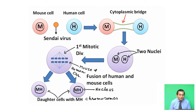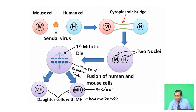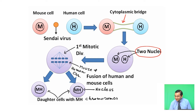Inactivated Sendai virus is used for the fusion of two cells. First, a cytoplasmic bridge is formed between the two cells. The two cytoplasmic membranes break down and the cells fuse. Two nuclei are visible — the mouse and human nuclei. Then chromosome division occurs. At the first mitotic division, a spindle is formed containing both mouse and human chromosomes, which further divide. The daughter cell carries a single nucleus with both mouse and human chromosomes.